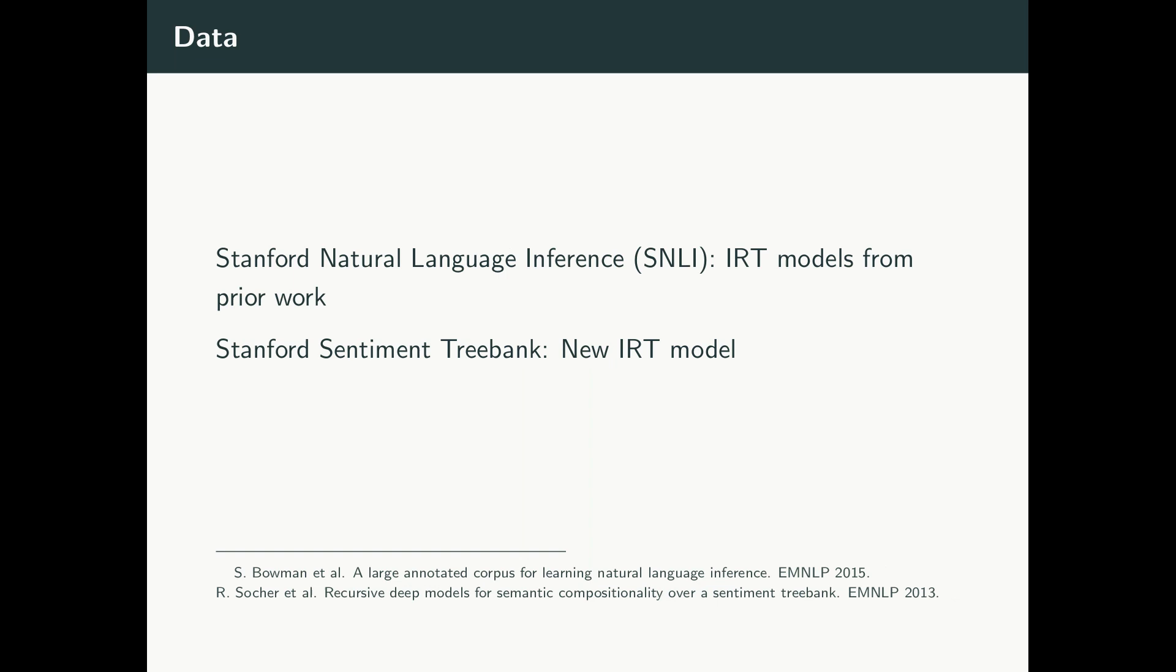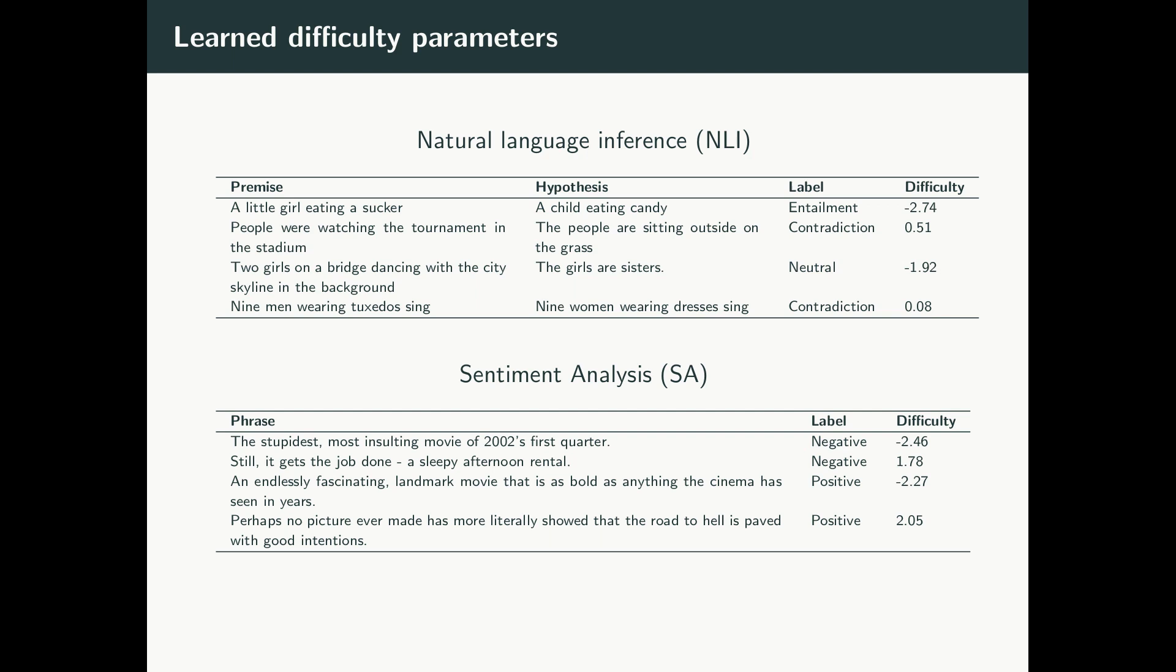In this work, we once again look at the SNLI dataset and use the pre-trained IRT models from our prior work. We also look at sentiment analysis, specifically the Stanford sentiment tree bank. For sentiment analysis, we selected a sample of about 130 items and repeated the IRT model fitting procedure described earlier. Going back to the examples we started with, the difficulty parameters in the right column are a result of the IRT model fitting process. We can see that certain items are easier than others. For example, the first negative sentiment item is much easier than the second because it is so negative. Now that we know the difficulty of our items, we can conduct our experiment to determine if item difficulty and training set size impact deep neural network model performance.